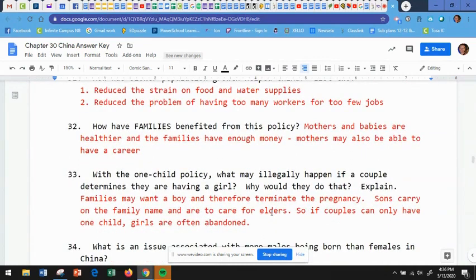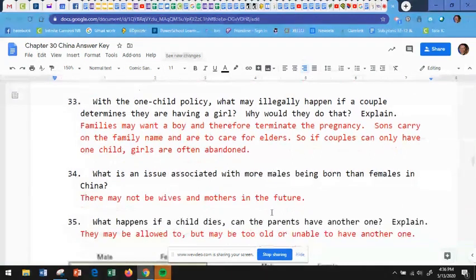Number 32, how have families benefited from this policy? Well, mothers and babies are healthier and the families now have enough money because they only have one child to buy things for. If you didn't know this, children are expensive. Mothers may also be able to have a career because they only have one child. And once that child is in school, or maybe they have an adult or there's a daycare for them to take the child to, it's easier for them to do that. Whereas before, if you're having four or five children, that becomes more difficult.